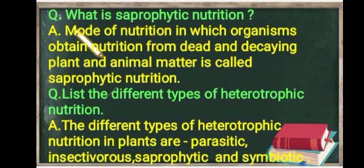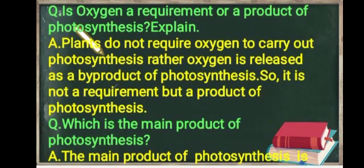The next question is: list the different types of heterotrophic nutrition. The different types of heterotrophic nutrition in plants are parasitic, insectivorous, saprophytic, and symbiotic.